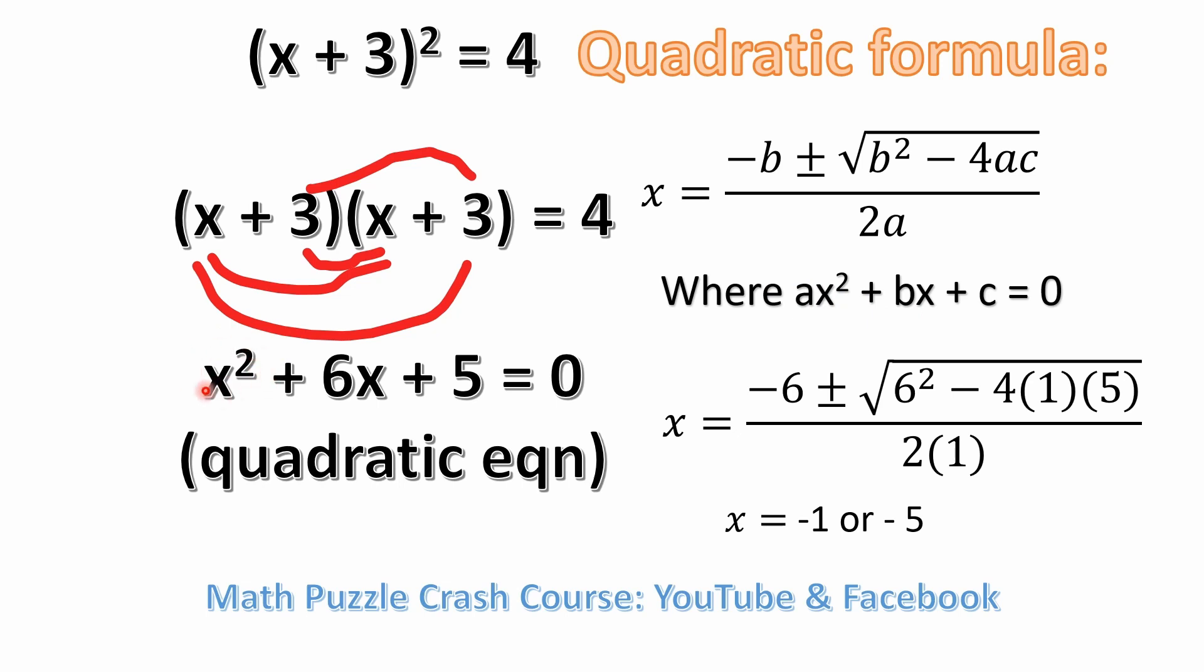Well, ax squared, if you look at this, we just have x squared. So it's basically 1 times x squared. So you don't show the 1. There's no need to show a 1 here. But basically, this is telling us that a is equal to 1.